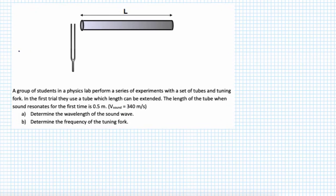The third problem: a group of students in a physics lab performs experiments with a set of tubes and a tuning fork. In the first trial they use a tube whose length can be extended. The length of the tube when the sound resonates for the first time is half a meter, and the speed of sound is given as 340 m/s. We need to find the wavelength and then the frequency.